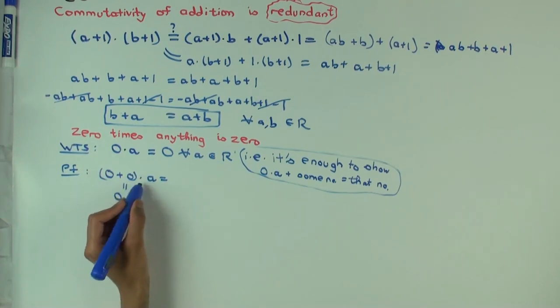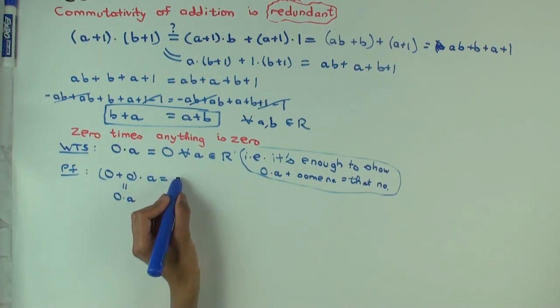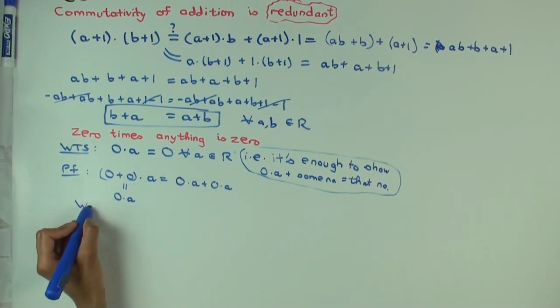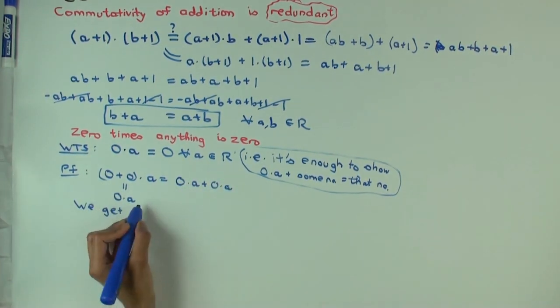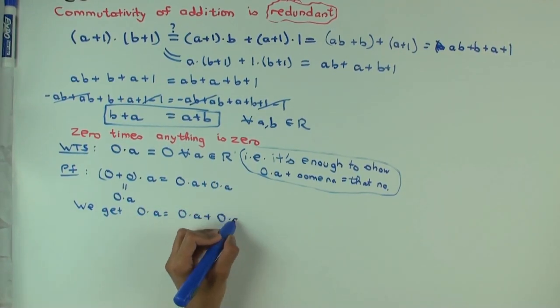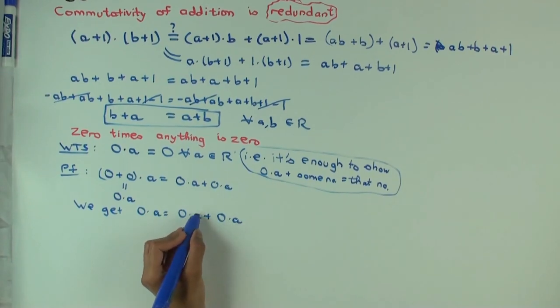On the other hand, you could distribute it. What would you get if you distribute it? Zero by A plus zero by A. Okay. So we get zero dot A is zero dot A plus zero dot A.